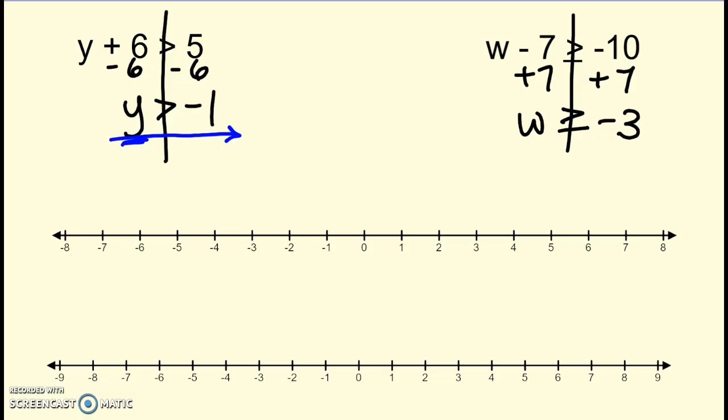It has to be bigger than negative 1. So negative 1 doesn't count, but 0, 1, 2, anything this way would work. So open circle and arrow to the right.